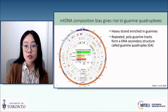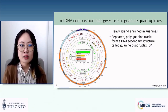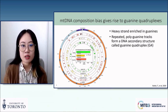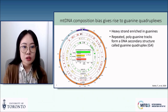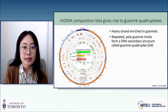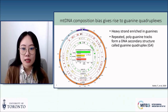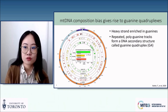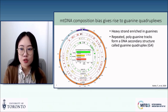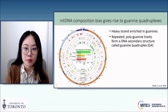Mitochondrial DNA is unique from nuclear DNA in that it has a heavy strand enriched in guanines. These repeated polyguanine tracts allow for the formation of a type of DNA secondary structure known as the guanine quadruplex, or a G4 structure. Looking at the figure on the left, the outermost tract shows mitochondrial DNA in a counterclockwise fashion with the control region at the very top. The innermost tract in green shows the position of stable G4 structures predicted to form along the mitochondrial DNA sequence, and the next tract in yellow shows the predicted unstable G4 structures. What I want you to take away from this figure is the abundance of G4 structures predicted to form throughout mitochondrial DNA.